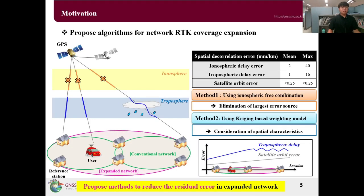In this study, we propose algorithms for Network RTK coverage expansion. The largest error source of residual error is ionospheric delay, so the first proposed method is using ionospheric-free combination measurement for integer ambiguity resolution. The next large error source is tropospheric delay, so the second proposed method is using kriging-based weighting model for considering the spatial characteristics of tropospheric delay.